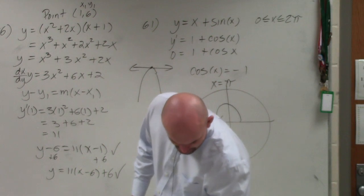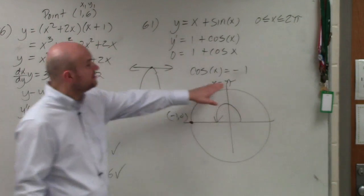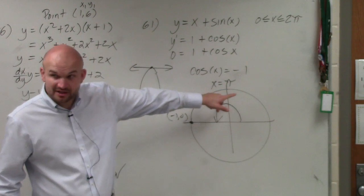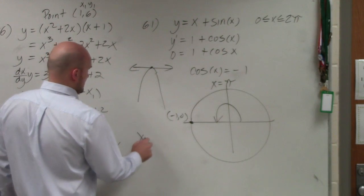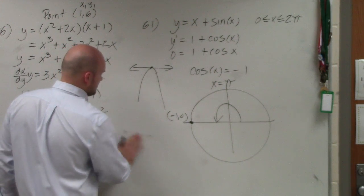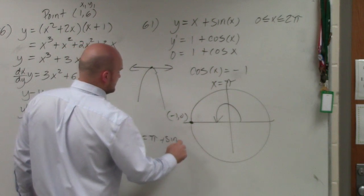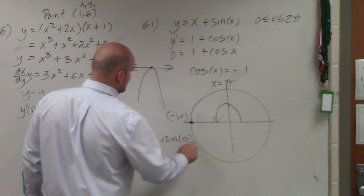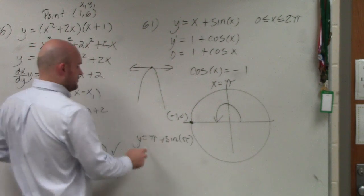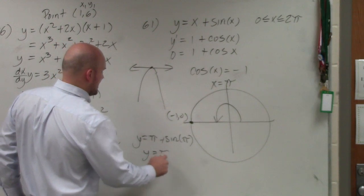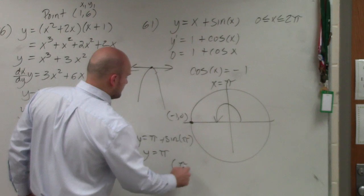It says determine the point. I did not determine the point — I only determined the x value. Now that we know x, let's plug that back in. Y equals π plus sine of π. The sine of π is 0, so y equals π. Therefore, my coordinate point is (π, π).